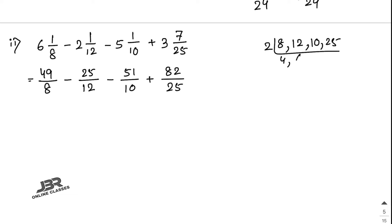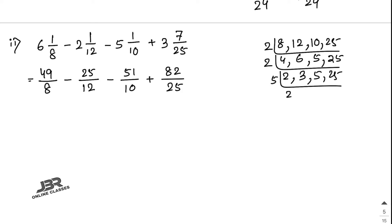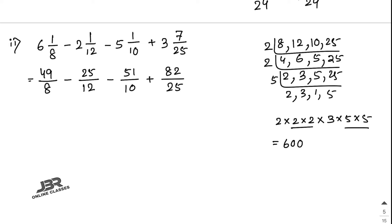Dividing by 2: 4, 6, 5, 25; by 2: 2, 3, 5, 25; then by 5: 2, 3, 1, 5. LCM equals 2 times 2 times 2 times 3 times 5 times 5, which is 600. With denominator 600: 600 divided by 8 is 75, so 75 times 49 equals 3675.